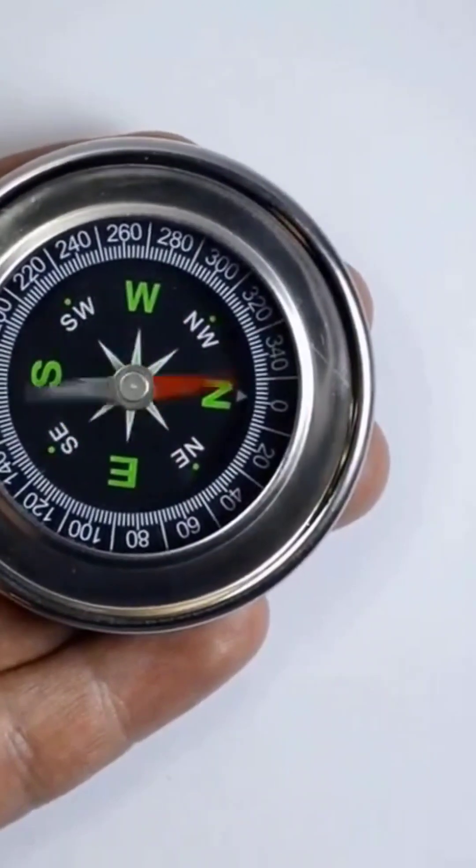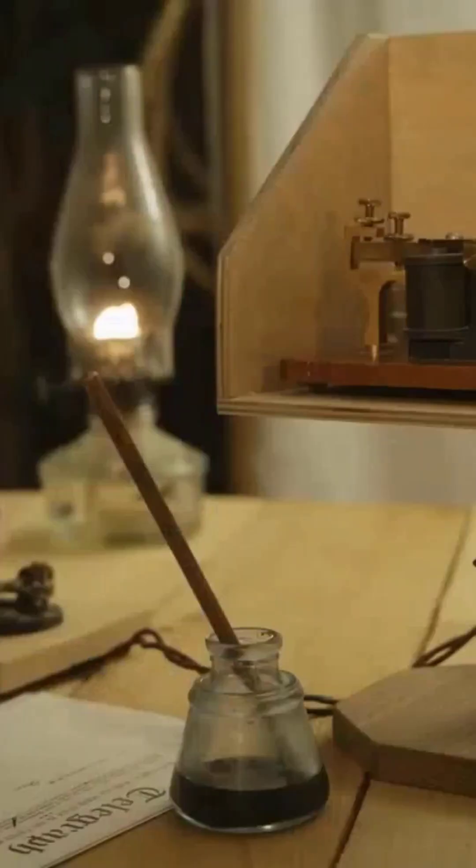In the mid-19th century, the Scottish physicist James Maxwell came and wrote equations that changed everything.